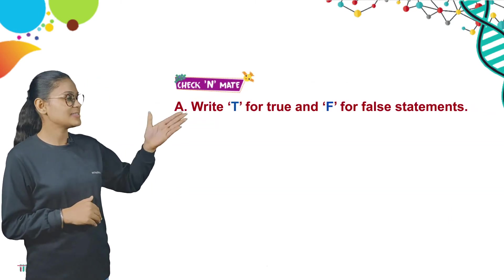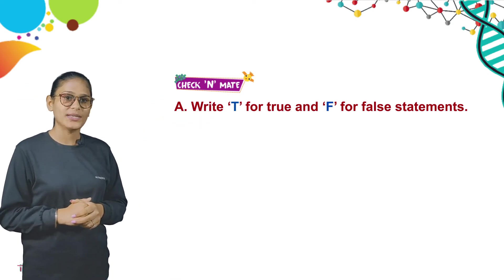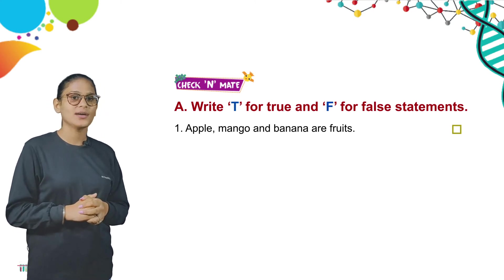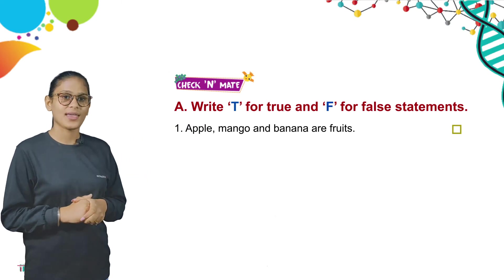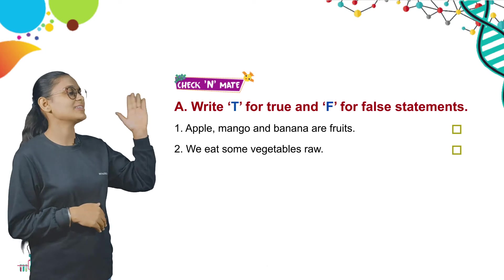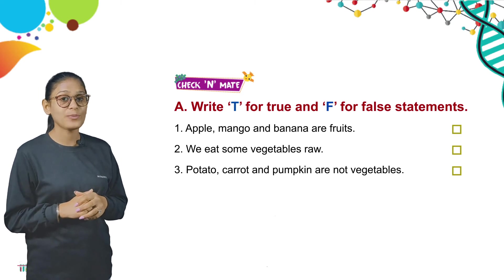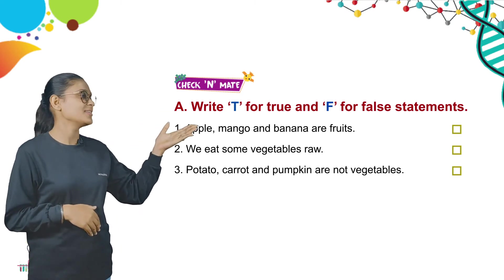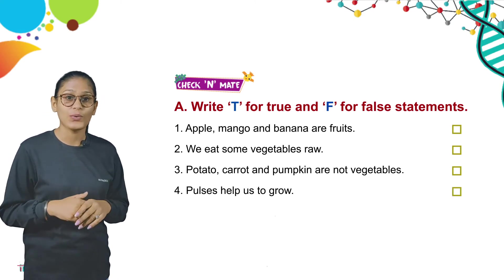Now we have a check-and-mate exercise — mark T for true and F for false. First: apple, mango, banana are fruits — true. Second: we eat some vegetables raw — true. Third: potato, carrot, and pumpkin are not vegetables — false. Fourth: pulses help us to grow — true.